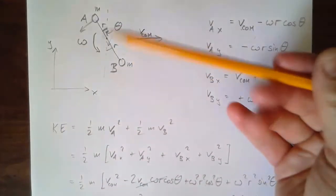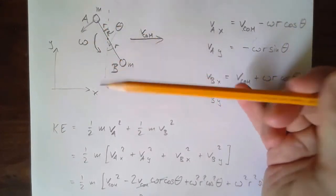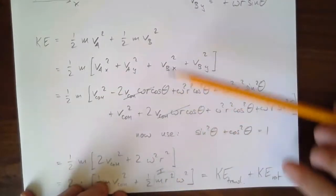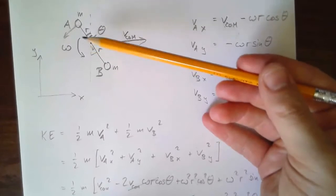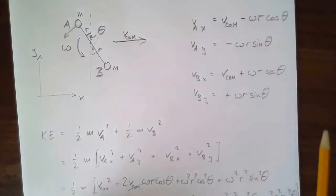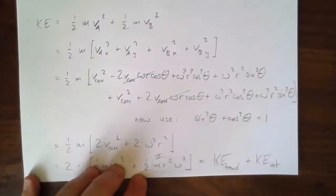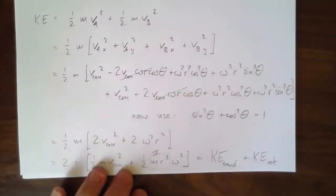You can try this for a different system or in full generality for a rigid body. You'd follow a similar derivation, possibly involving an integral. But the principle — that total KE equals translational KE plus rotational KE — stays the same.